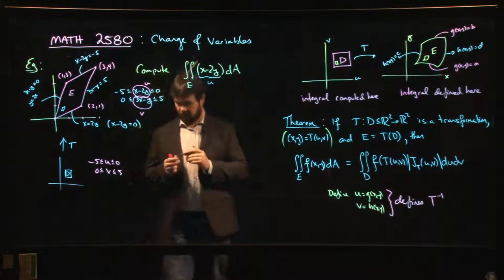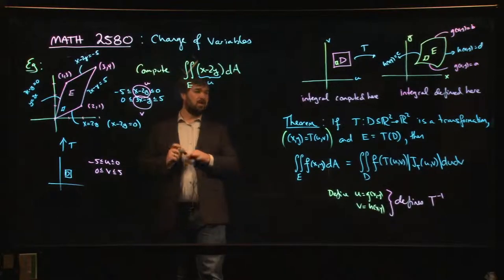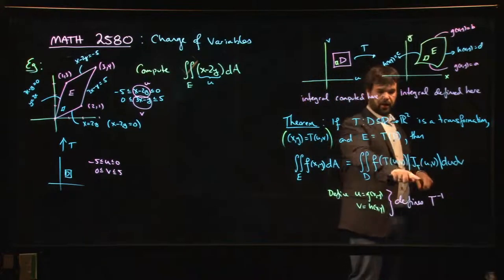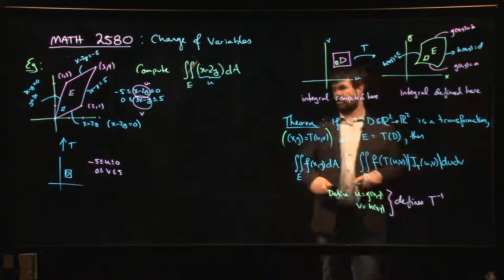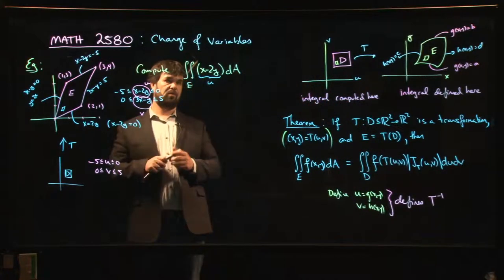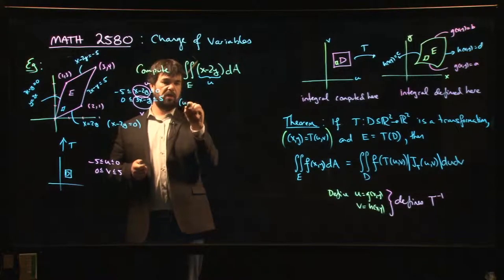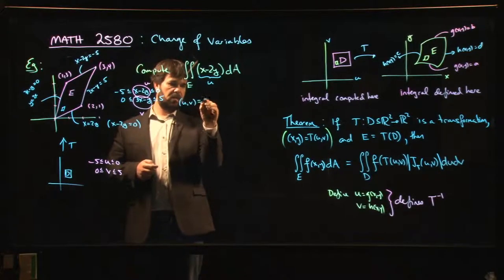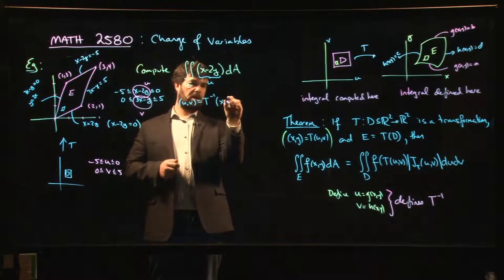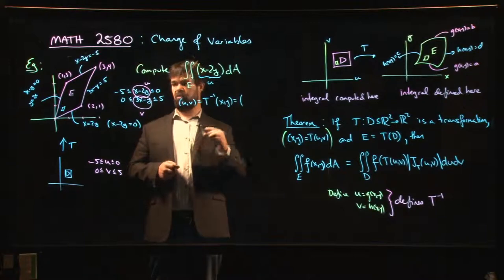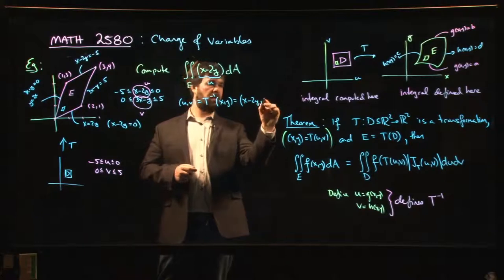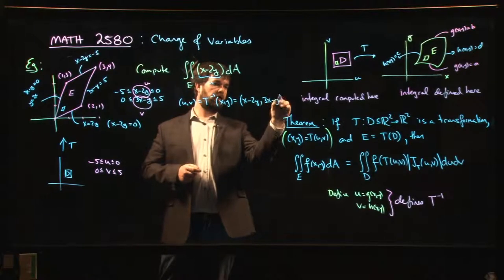Now, the other thing you might notice is that what we've got is we don't have the transformation, we've got the inverse. We've said that uv equals T inverse of xy, and we've defined that inverse transformation by x minus 2y and 3x minus y.